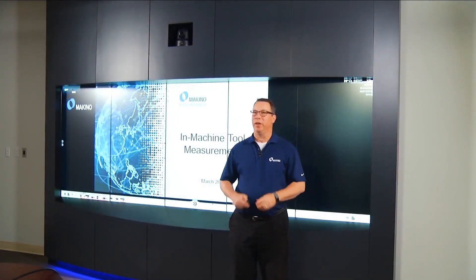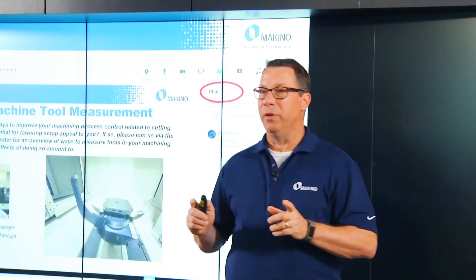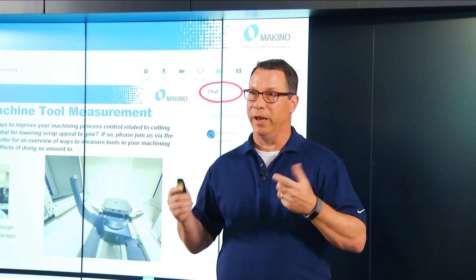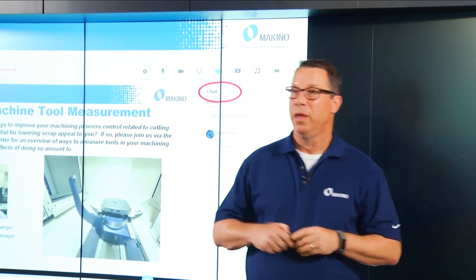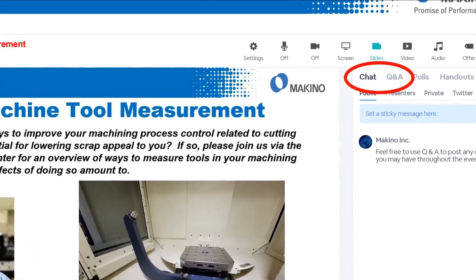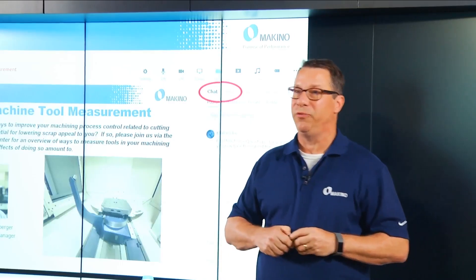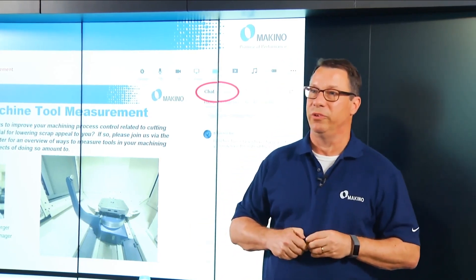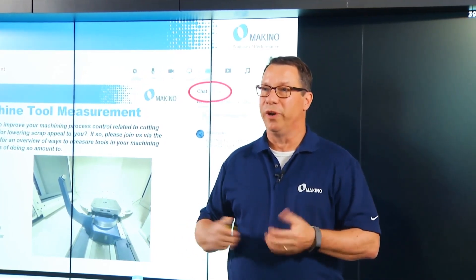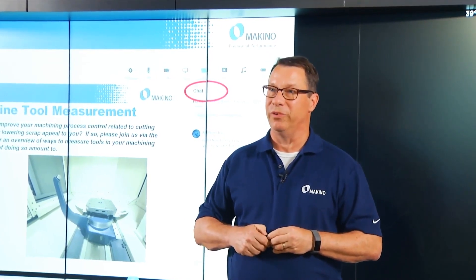Thank you for joining us today while I talk about in-machine tool measurement. My name is John Einberger. I'm Product Line Manager for the Horizontal Machining Centers here at Makino, coming to you today from our headquarters in Mason, Ohio. We are going to have the ability to have two-way dialogue answering any questions that you might come up with. There's a chat function in the upper right-hand corner of your screen — we have people monitoring the chat questions as they come in today, so feel free to ask questions and we'll address them at the end of today's presentation.